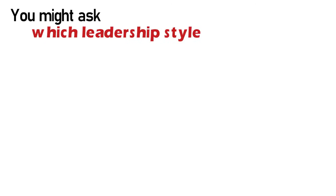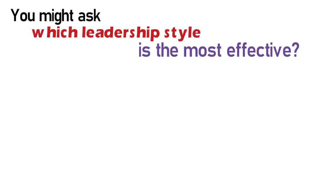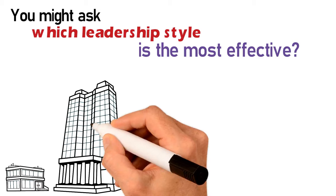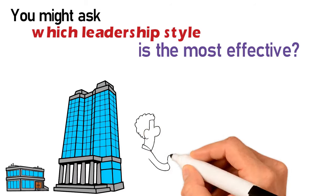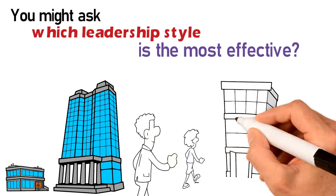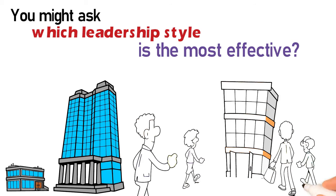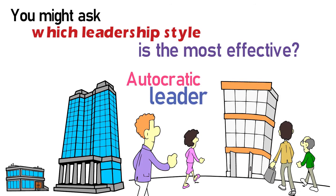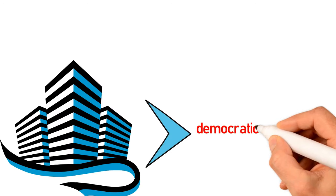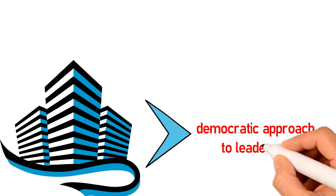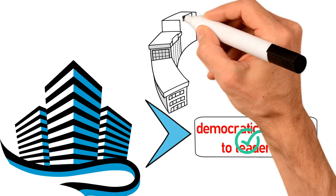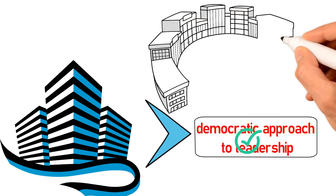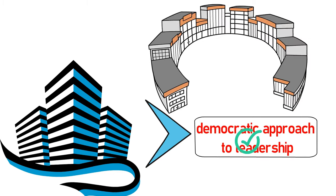You might ask, which leadership style is the most effective? This answer usually depends on the type of business. For example, a business that is trying to survive and needs to make quick decisions is likely to need an autocratic leader. However, a lot of businesses are moving towards a more democratic approach to leadership, due to increased competition in most industries, meaning that businesses need to be innovative when making key decisions.